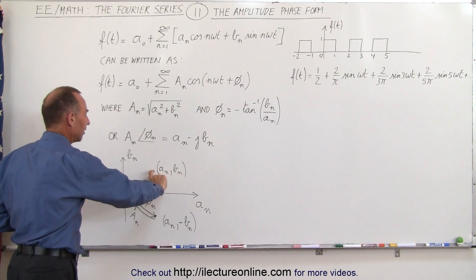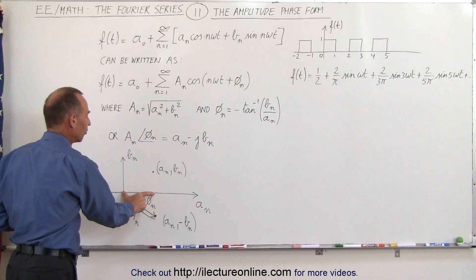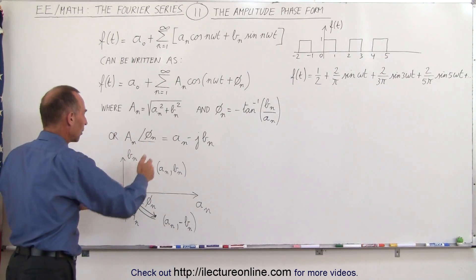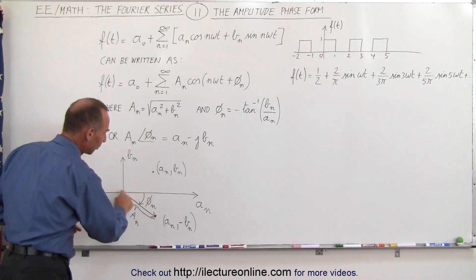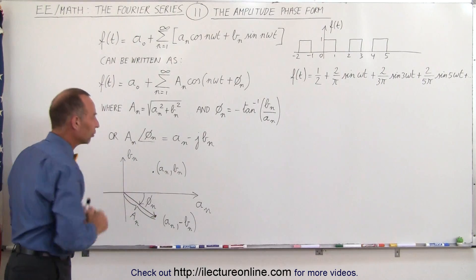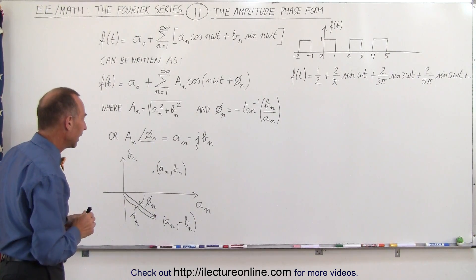In other words, we take this distance squared plus this distance squared, add it together, take the square root, and that gives us the amplitude of a sub-n, the magnitude or the amplitude of a sub-n.